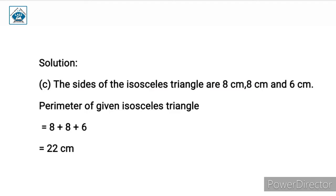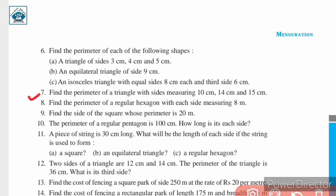Question number seven: find the perimeter of a triangle with sides measuring 10 centimeter, 14 centimeter, and 15 centimeter. This question is similar to question number six part a. This is homework for you — solve this question and write the proper solution in your notebook.